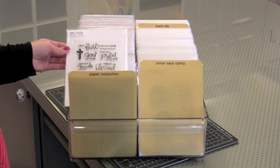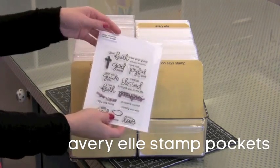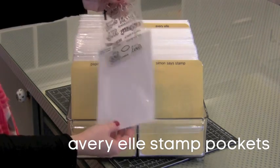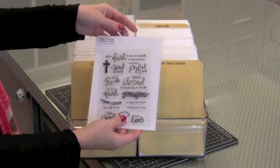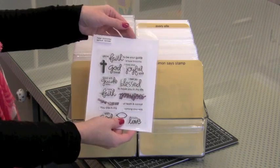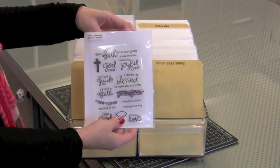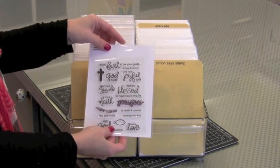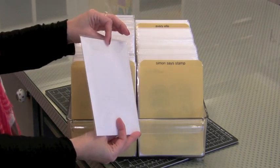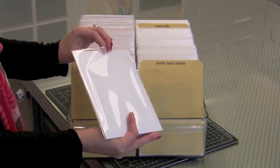The pockets that I use are the Avery Elle stamp pockets. They hold clear and cling stamps perfectly. I have white paper cut to fit inside or you can buy the inserts from Simon Says Stamp, but I just cut my own. So you can put these into this container. Any kind of CD storage container is usually the right width for these pockets.